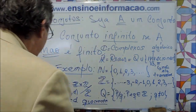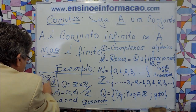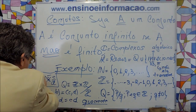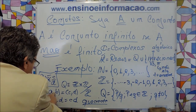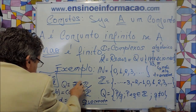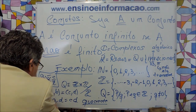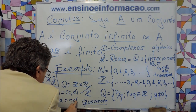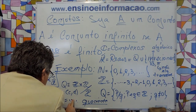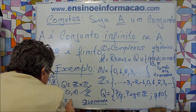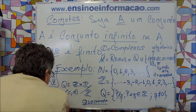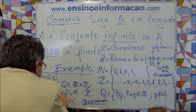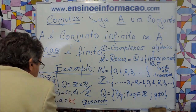Vamos voltar aqui só para corrigir um errinho. Nós falamos uma coisa e escrevemos outra. (A, B) ~ (C, D) — a relação de classe de equivalência — é quando A·D é igual a B·C. Nós colocamos CD mas na verdade é BC: A·D é igual a B·C.